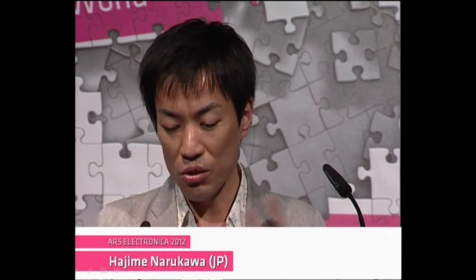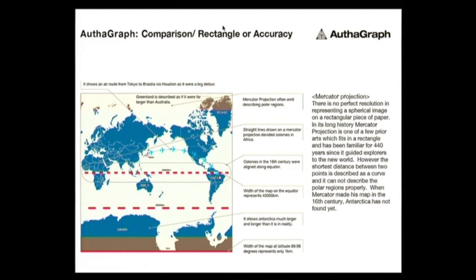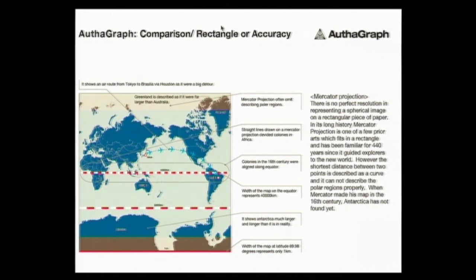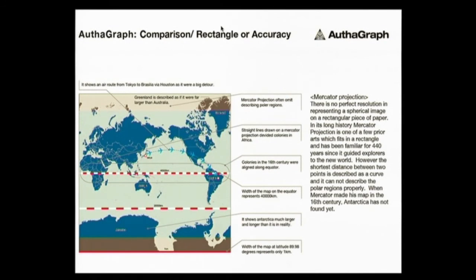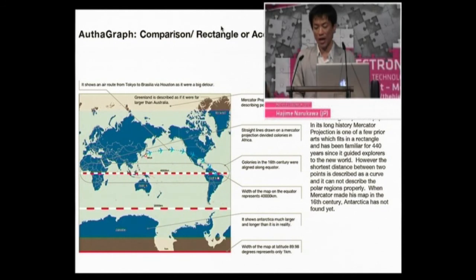Now let's turn to two prior artworks to illustrate why I developed a new world map. First, it is very important to recognize that there is no perfect resolution in representing a spherical image onto a flat, rectangular piece of paper. There is always distortion in every world map. In its long history of map making, the Mercator projection is one of a few prior arts that fits into a rectangle and has been familiar for 440 years.